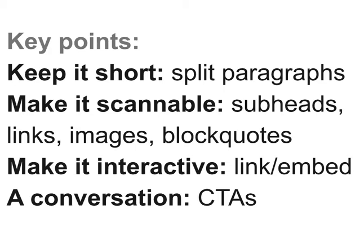In content management systems like Medium and WordPress, to make a block quote you simply select the text. On Medium, a menu will appear where you can click a quotation button to make it a block quote. On WordPress, there will be a button in the menu above where you can make it a block quote in a similar way. Also, make your content interactive — always look to link to the background, the sources you've used to create the article, the sources of quotes or reports. And think about embedding social media elements, video, and other multimedia.